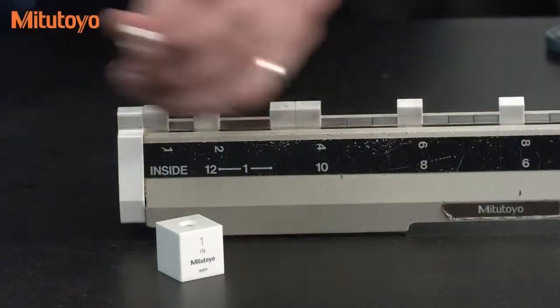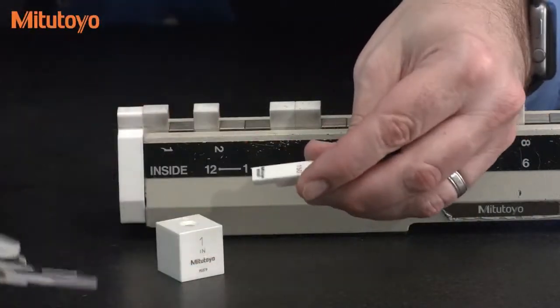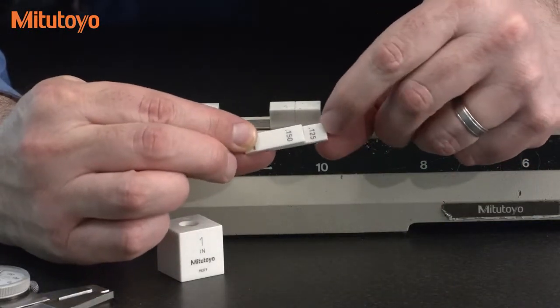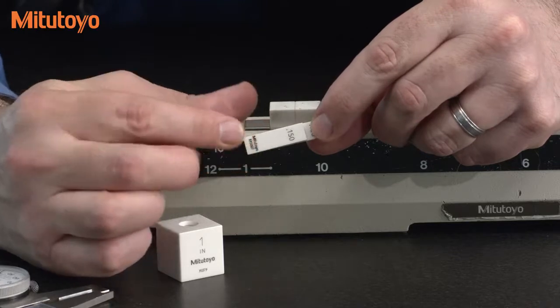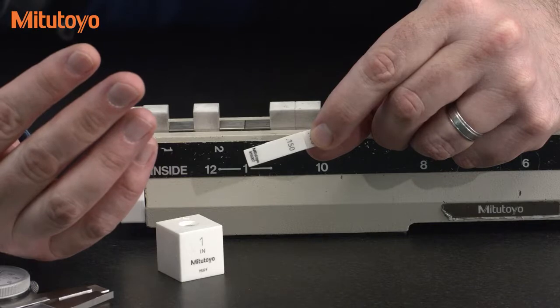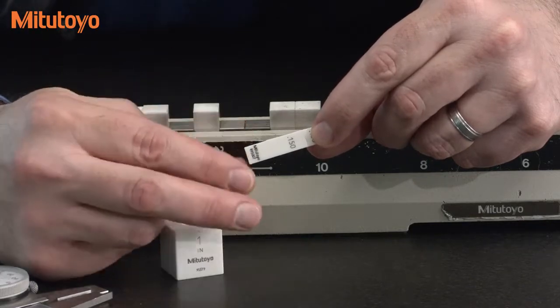So for an example I have two gauge blocks that are wrung together here. This is a .125 gauge block and this is a .150 gauge block. These are standard blocks from any set of gauge blocks, so most people have these.